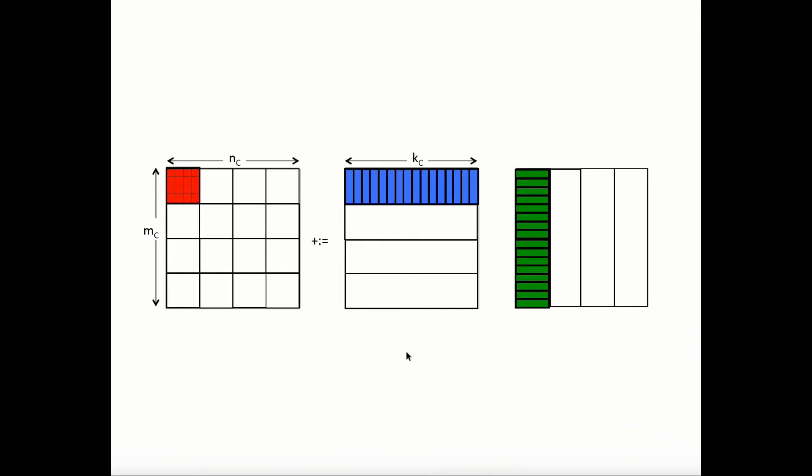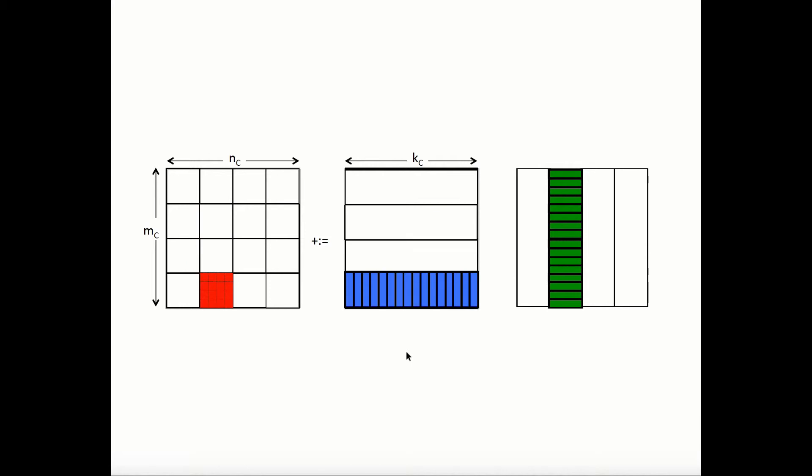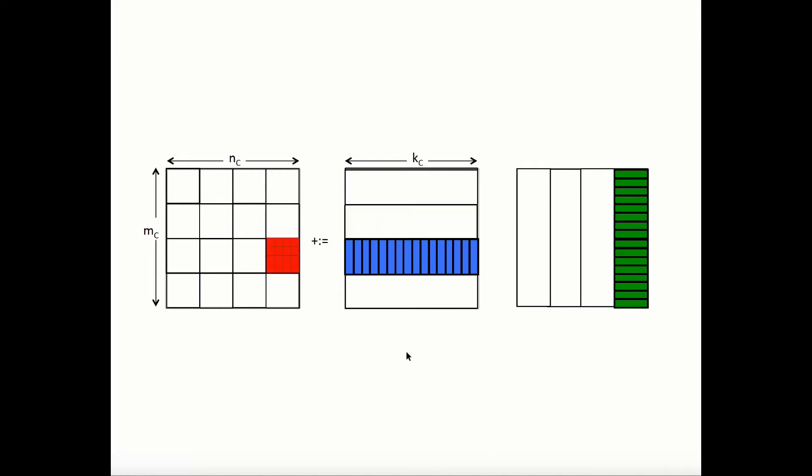Now, let's look carefully at how the micro panels of A are used and reused. What we notice is that those are reused many times, and therefore we would like to keep that entire block of A in the cache as long as possible so that we get lots of reuse of that data.